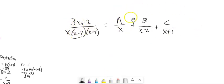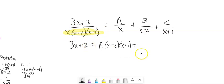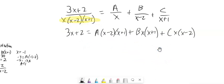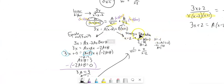I want to take this fraction and rewrite it as that sum, where they're equivalent. Same strategy as before: multiply both sides by the full denominator. On the left it's just gone, leaving 3x plus 2. On the right, the x's cancel leaving a times x minus 2 times x plus 1; the x minus 2 cancels leaving b times x times x plus 1; and the x plus 1 cancels leaving c times x times x minus 2.